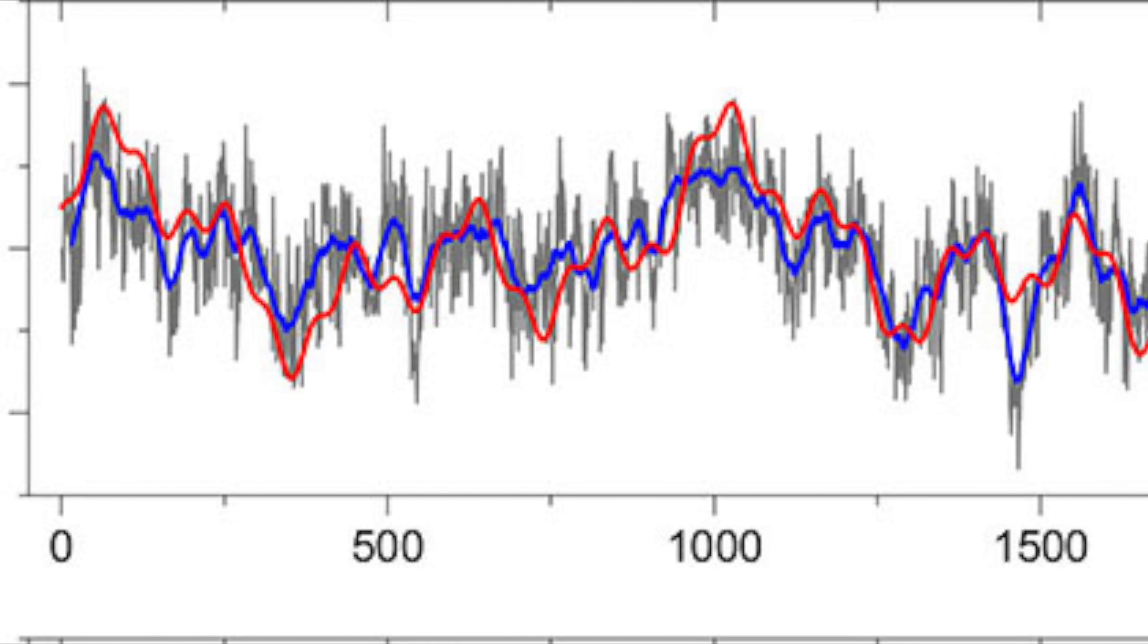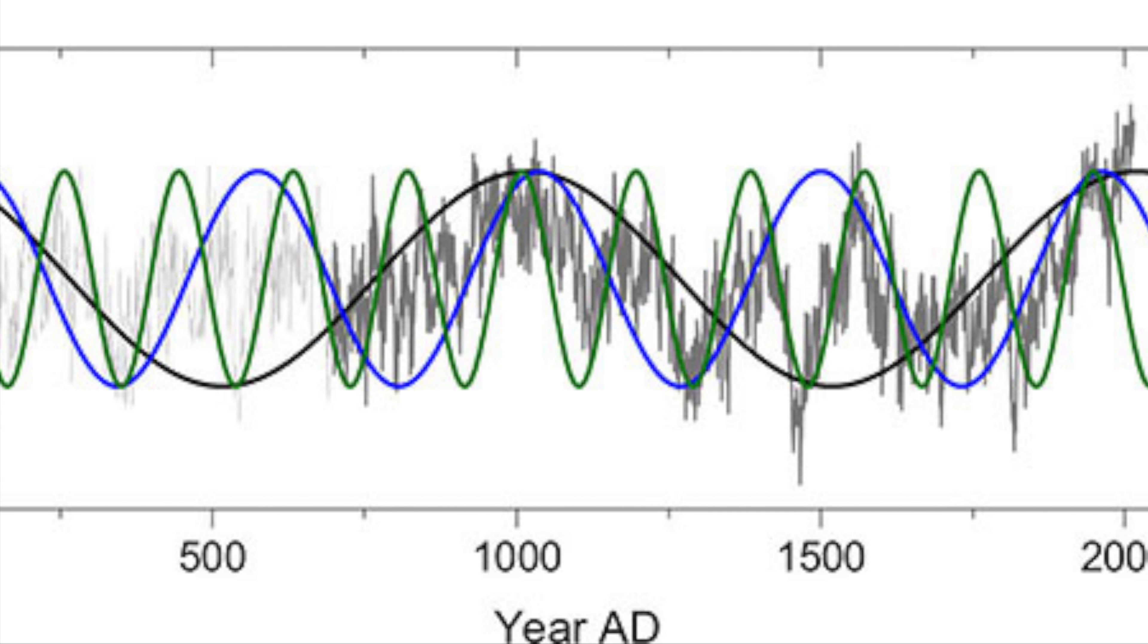G7 and likewise the sine representations have maxima of comparable size at AD 0, 1000, and 2000. We note that the temperature increase of the late 19th and 20th century is represented by the harmonic temperature representation and thus is of pure multi-periodic nature.